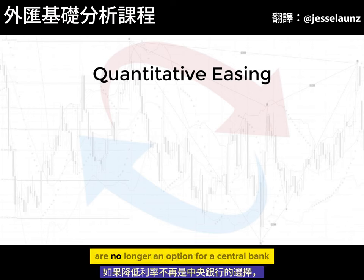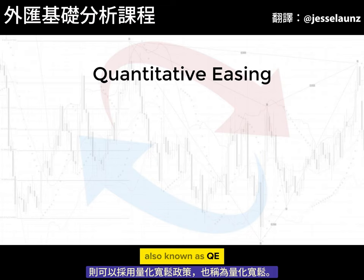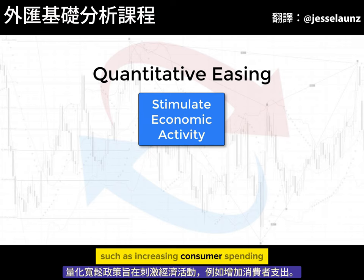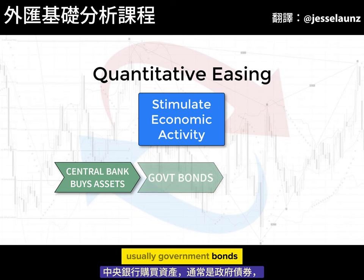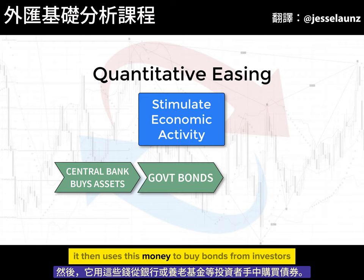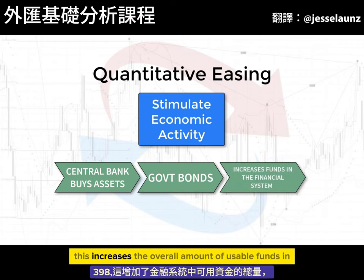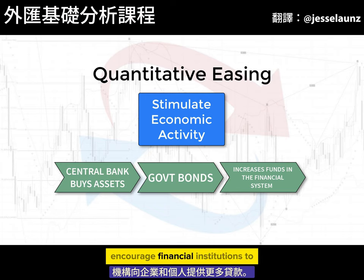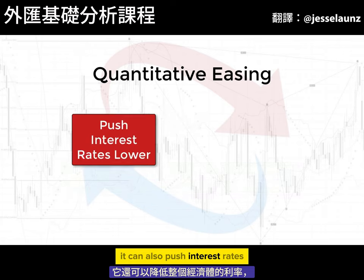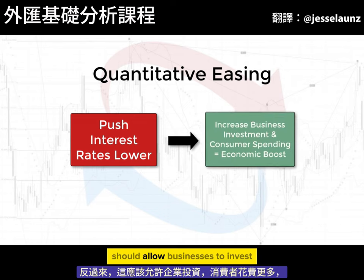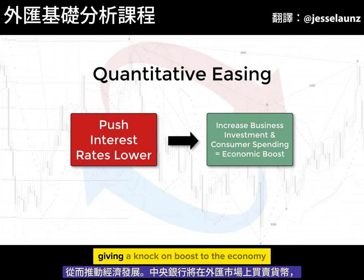If lowering interest rates are no longer an option for a central bank, quantitative easing, also known as QE, may be employed. QE is aimed at stimulating economic activity such as increasing consumer spending. The central bank buys assets, usually government bonds, with money it has printed or, more accurately, created electronically. It then uses this money to buy bonds from investors such as banks or pension funds, increasing the overall amount of usable funds in the financial system. Making more money available is supposed to encourage financial institutions to lend more to businesses and individuals, and can also push interest rates lower across the economy, allowing businesses to invest and consumers to spend more, giving a knock-on boost to the economy.